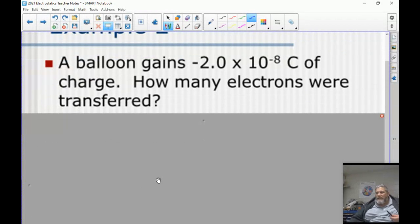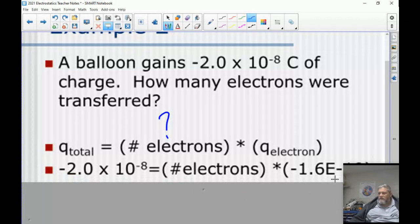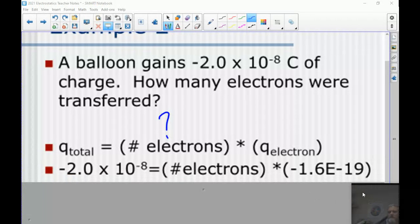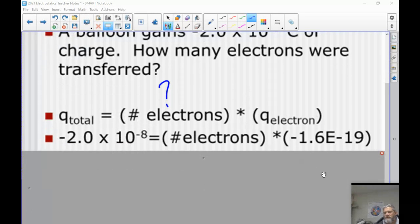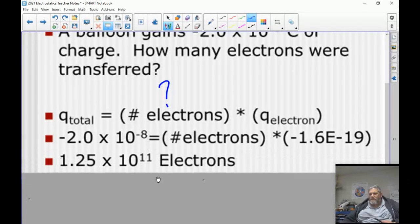The next example: a balloon gains this many coulombs of charge when you rub it, maybe when you rub it against your head or something like that. How many electrons were transferred? So now we work it a little bit backwards. Again, we start with the same expression that the total charge is just the number of electrons times the charge of electron. This time we don't know, this is going to be our question mark. So our charge, our total charge is negative 2 times 10^-8. That's going to equal the number of electrons times the charge of electron. Then we just divide, and we find out it's 1.25 times 10^11 electrons. That's a lot of electrons, but you got to remember electrons are really, really, really small.